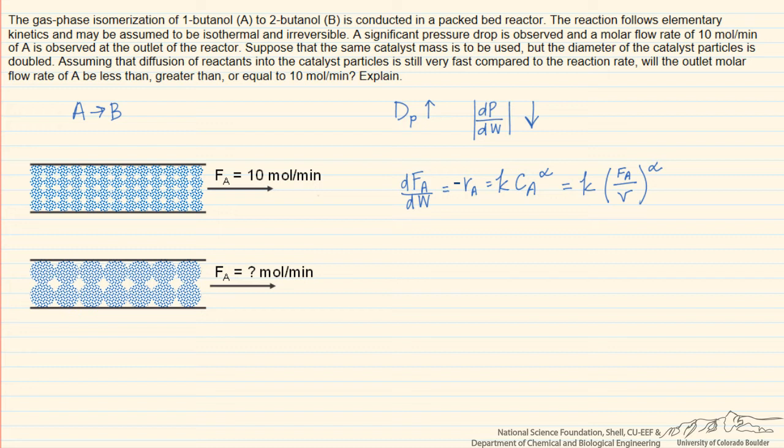But the volumetric flow rate won't rise as much, so the volumetric flow rate will go up by less as we decrease the pressure drop by using these larger catalyst particles. And so since this term will overall be smaller in the reactor, and that term shows up in the denominator, then we are going to expect that the molar flow rate of A is going to drop more quickly.